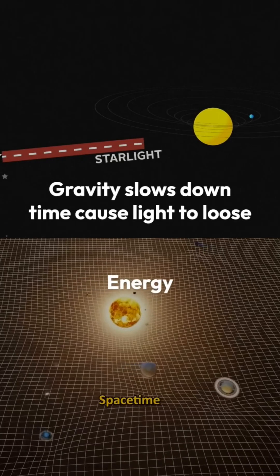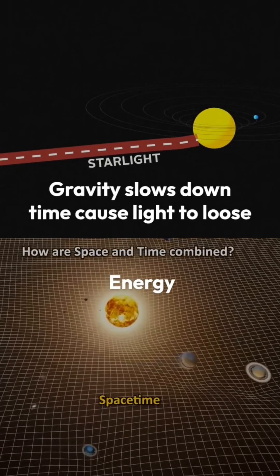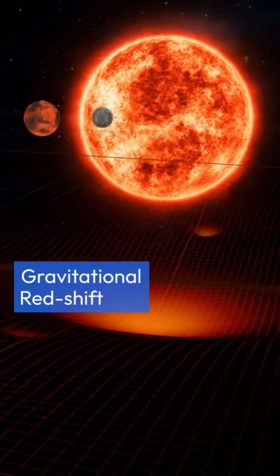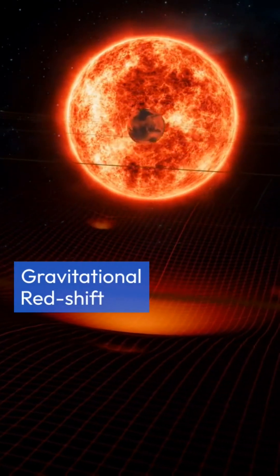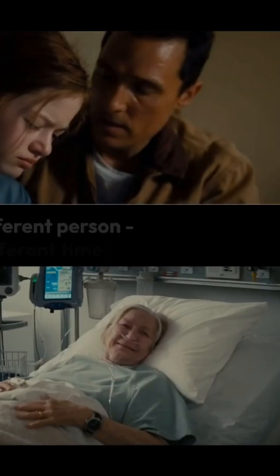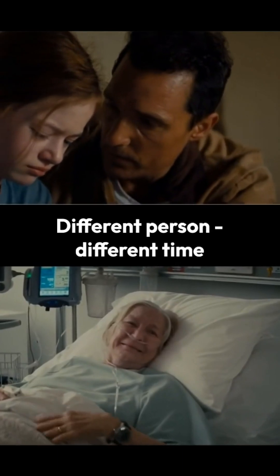Gravity slows down time and causes light to lose energy, resulting in a decrease in frequency — which is the inverse of time — known as gravitational redshift, causing different time rates for each person.